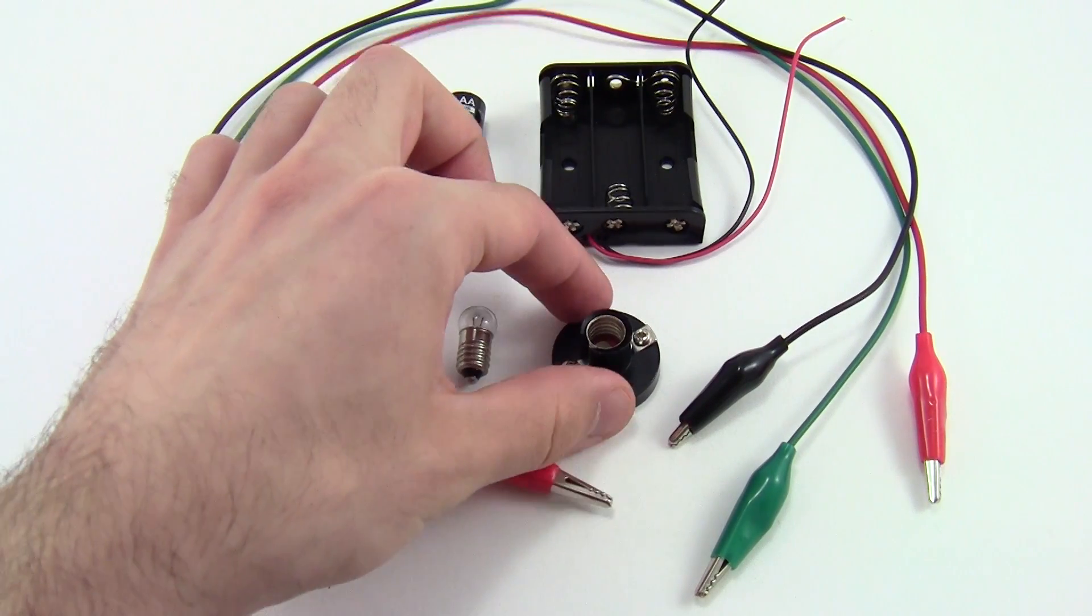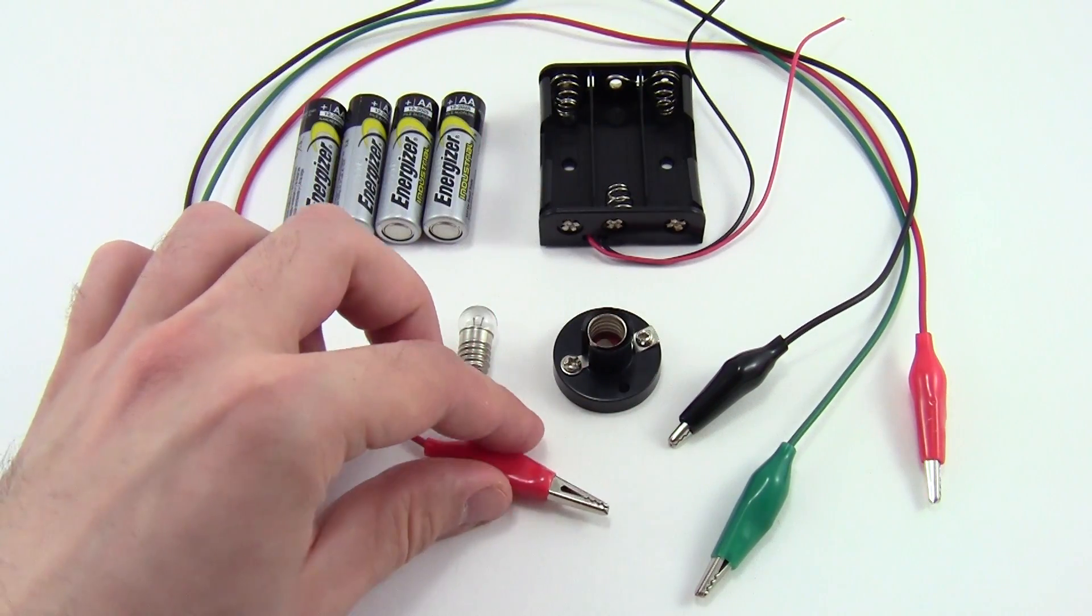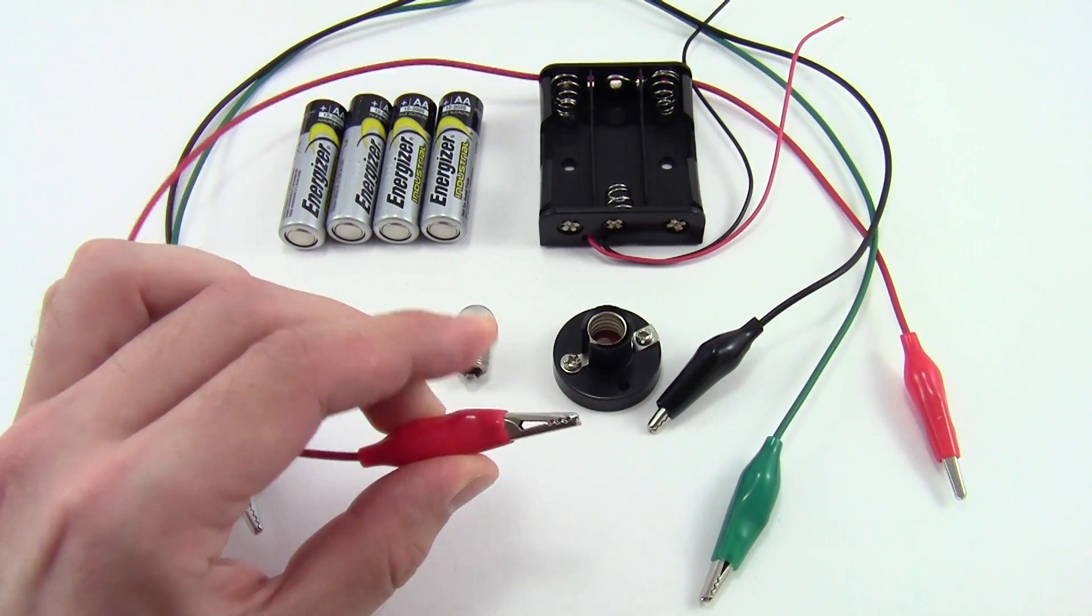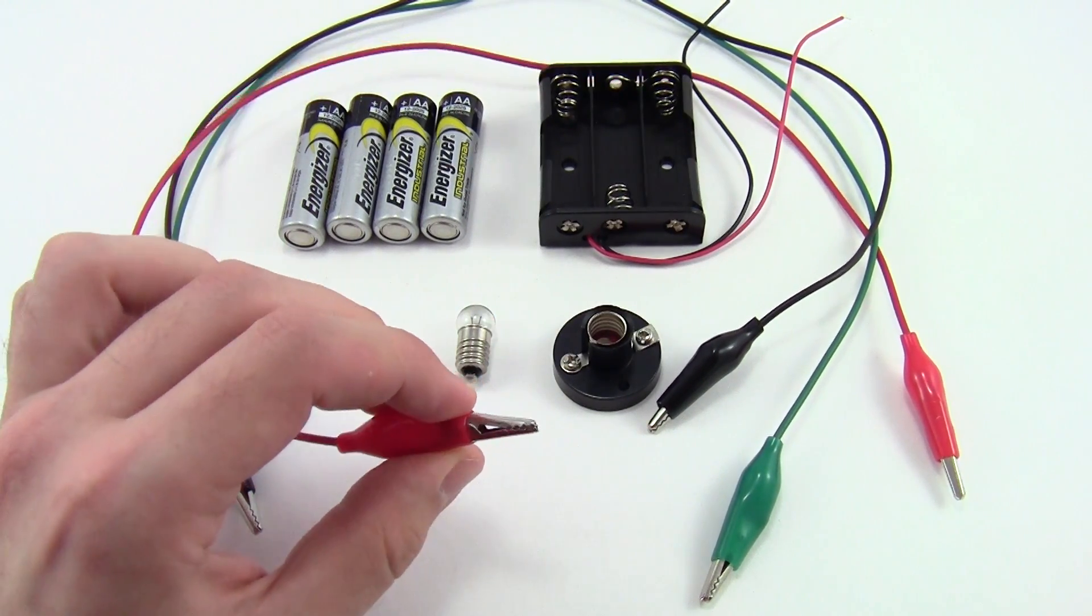You have a small light bulb, a light bulb base, and three alligator clips, which get their name because they have these little metal jaws that can grab onto wires and circuit components.